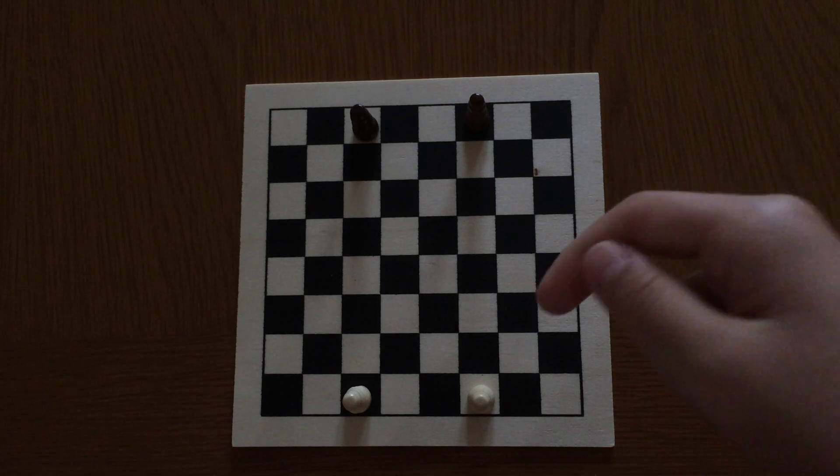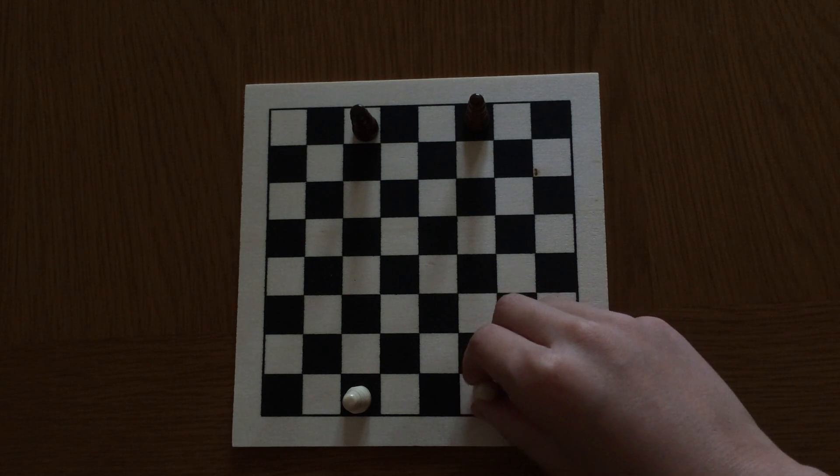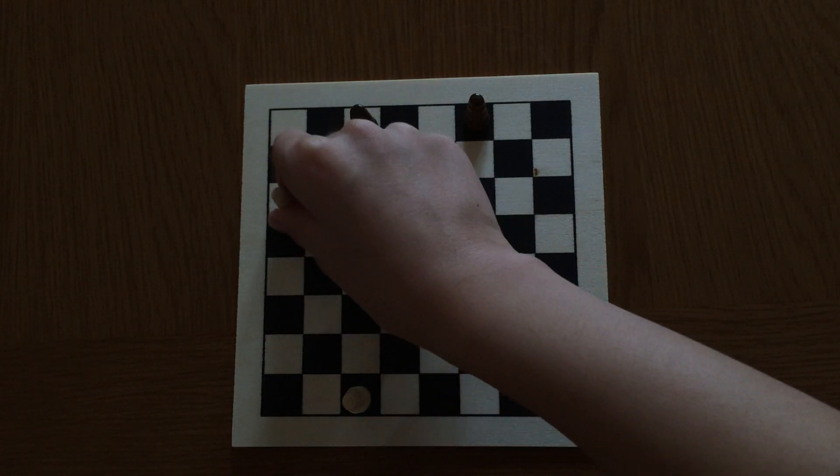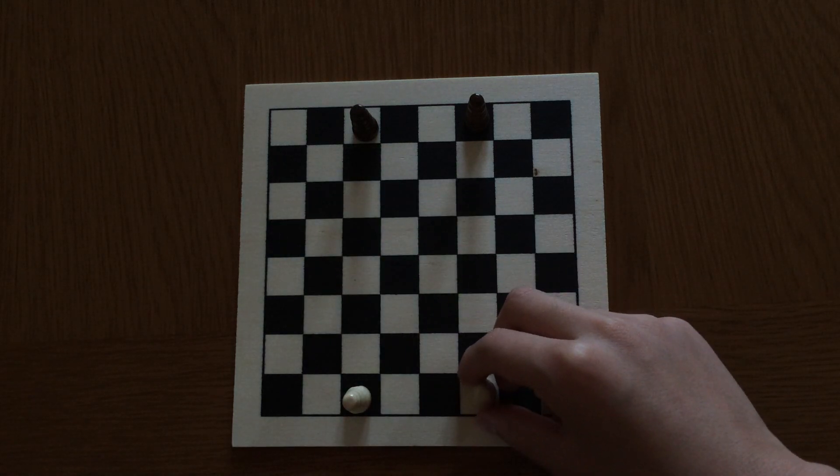This video will be about how bishops move. Bishops move diagonally on each square color.